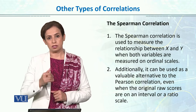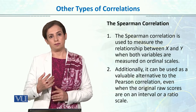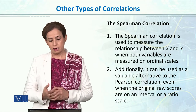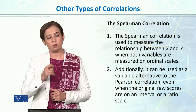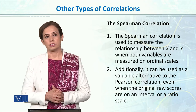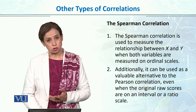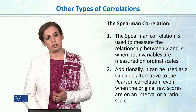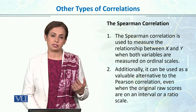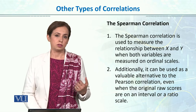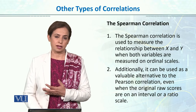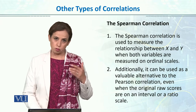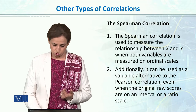Sometimes we have continuous data on a ratio or interval scale, but we can also use Spearman's rank-based correlation. Mostly, however, the Spearman rank order correlation is used with ordinal data — for example, if you have the variable socioeconomic status and the other variable is academic achievement, you can use ordinal data and make a correlation.